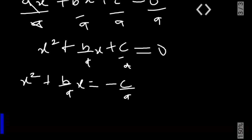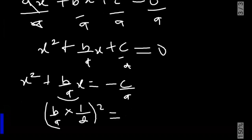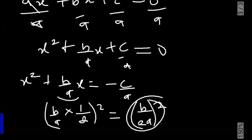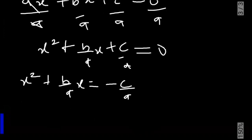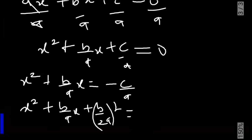The next thing we are going to do is to pick the coefficient of x, which is b over a, and multiply by half. Now we have it squared, so this becomes b over 2a, all squared. We add this to the left hand side and the right hand side, so we have x squared plus b over a times x plus b over 2a all squared equal to minus c over a plus b over 2a all squared.